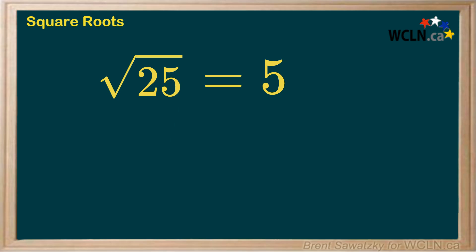So for 25, we know that 5 times 5 is 25. So yes, that's definitely a square root. But also, negative 5 times negative 5 will also give you 25.